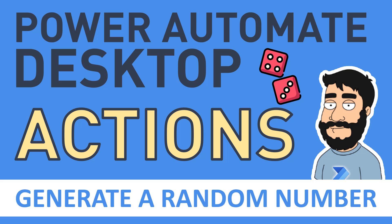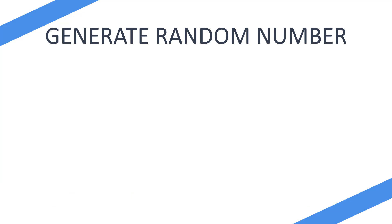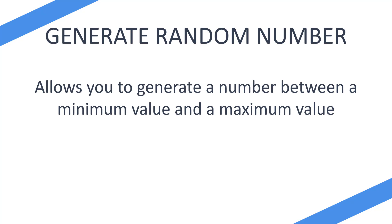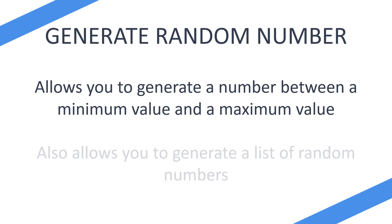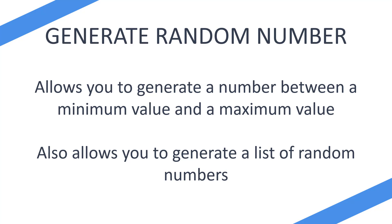Today we're looking at Power Automate Desktop Actions. We're going to be looking at how to generate a random number. The action is 'Generate Random Number'. This allows you to generate a number between a minimum value and a maximum value that you give. This action also allows you to generate a list of random numbers — so not only can you generate a single number, you can generate a list of random numbers.